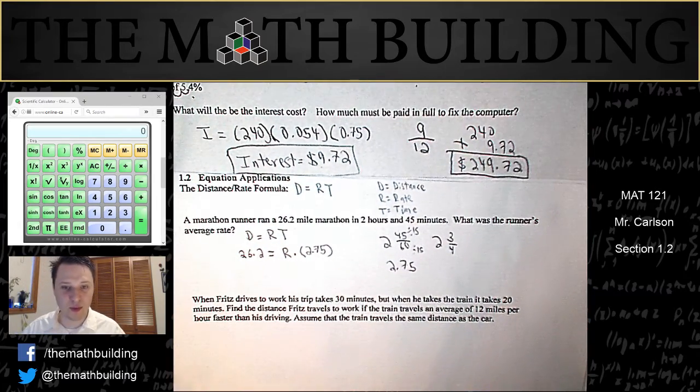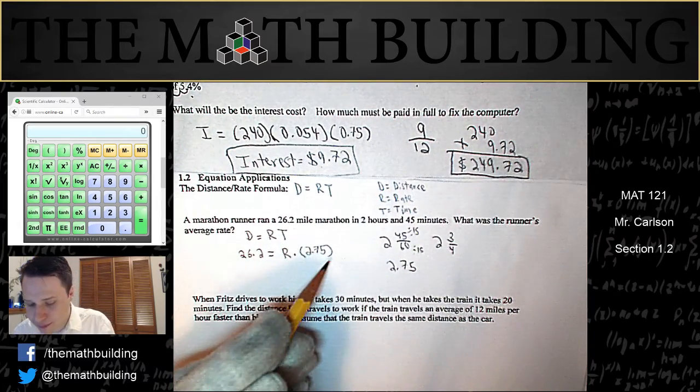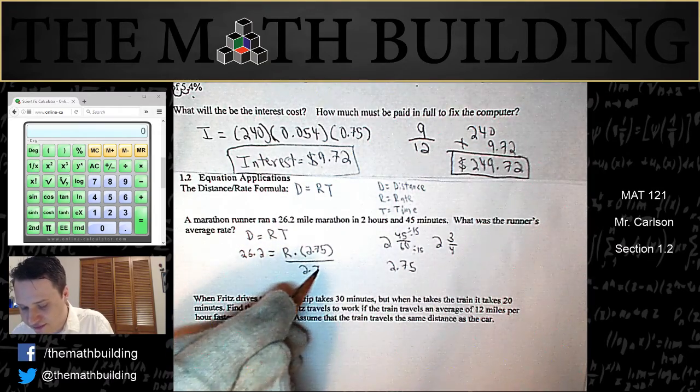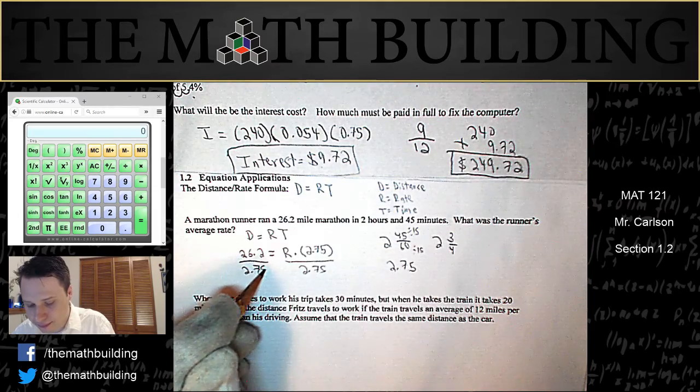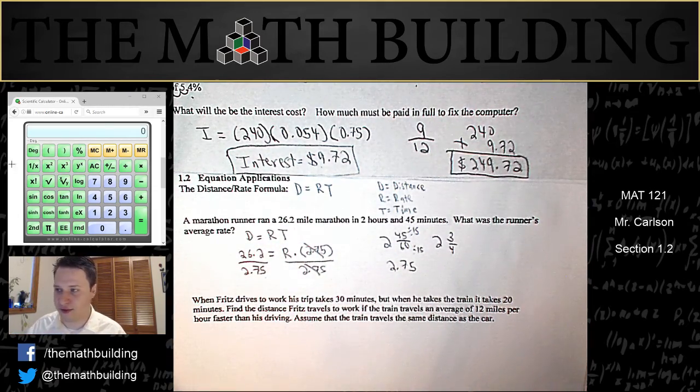And once we get past there, we see we're just one step away. We just need to divide both sides by 2.75. So those cancel, and let's grab our calculator and do that.